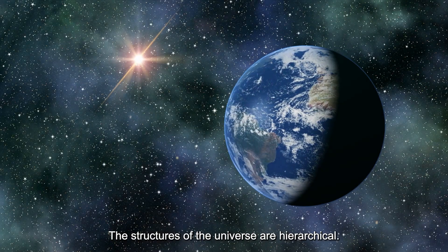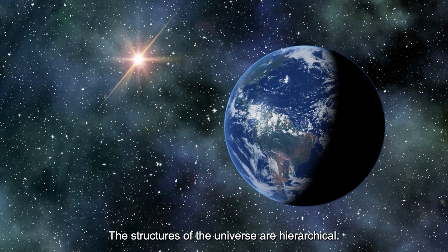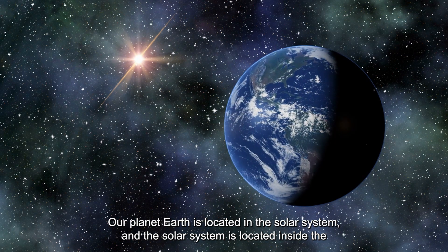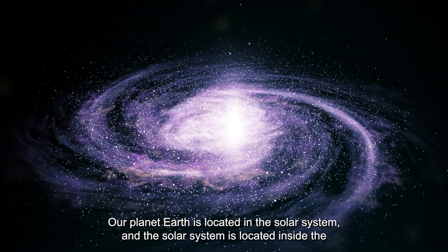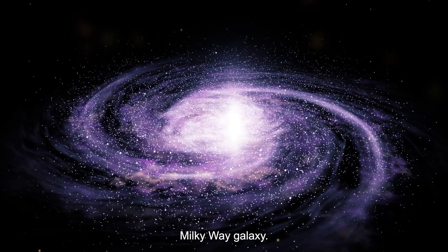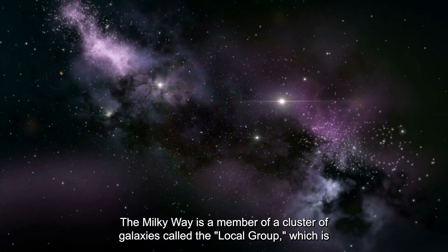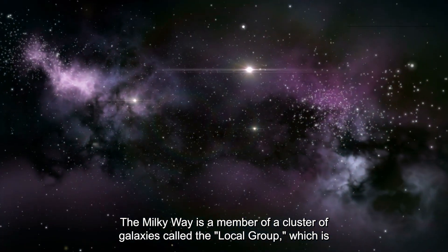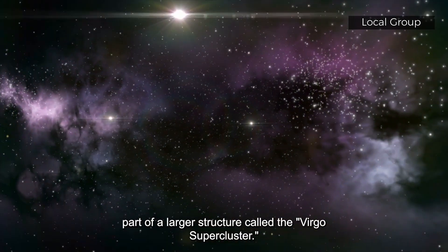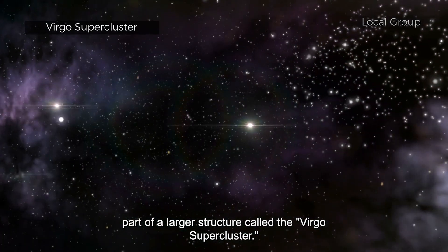The structures of the universe are hierarchical. Our planet Earth is located in the solar system, and the solar system is located inside the Milky Way galaxy. The Milky Way is a member of a cluster of galaxies called the Local Group, which is part of a larger structure called the Virgo Supercluster.